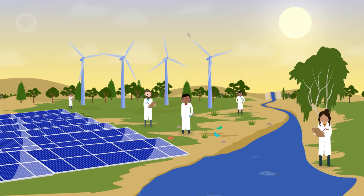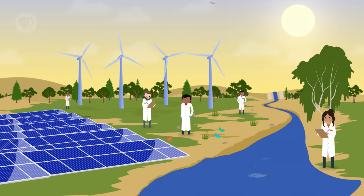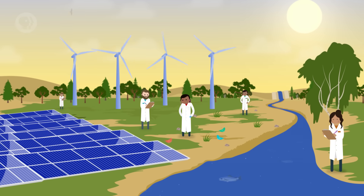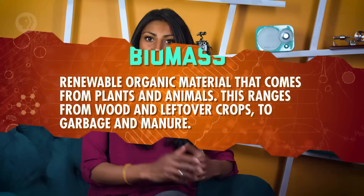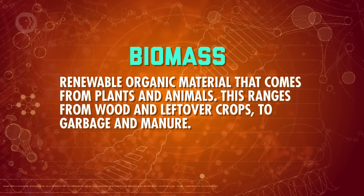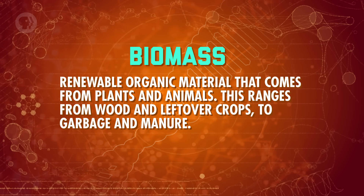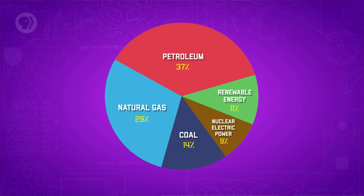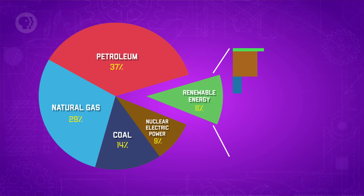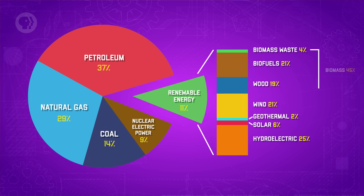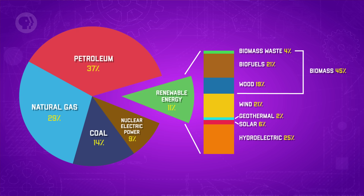There's also a growing focus on the environment and sustainable energy within the field of chemical engineering. We want to both preserve what we already have and find energy sources that won't run out. One source closely related to chemical engineering is biomass — renewable organic material that comes from plants and animals. This ranges from wood and leftover crops to garbage and manure. As of 2016, biomass fuels provide about 5% of the primary energy used in the United States, and chemical engineers play a big part in figuring out what can be used as biomass and how best to break it down to get energy from it.